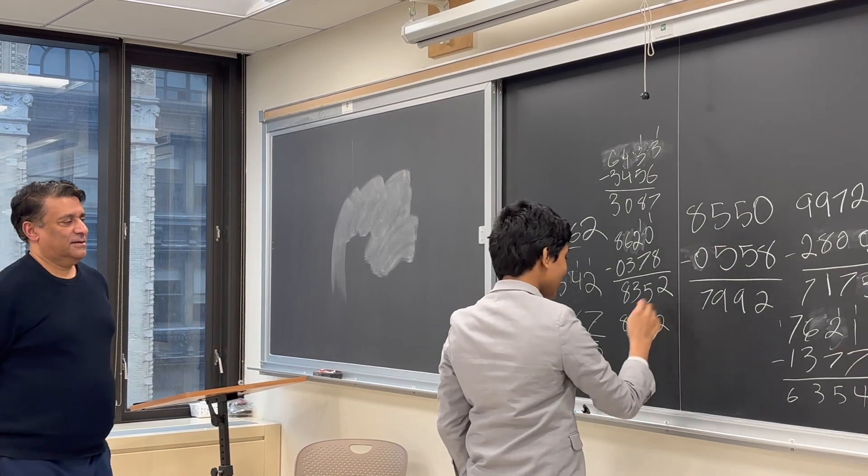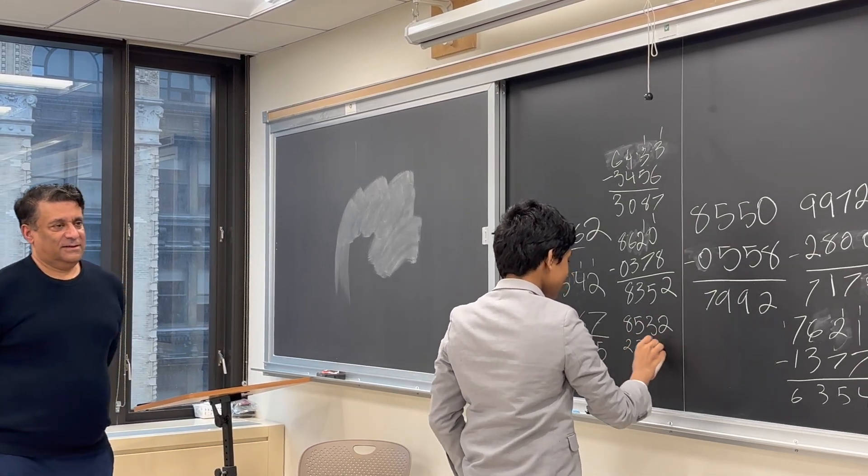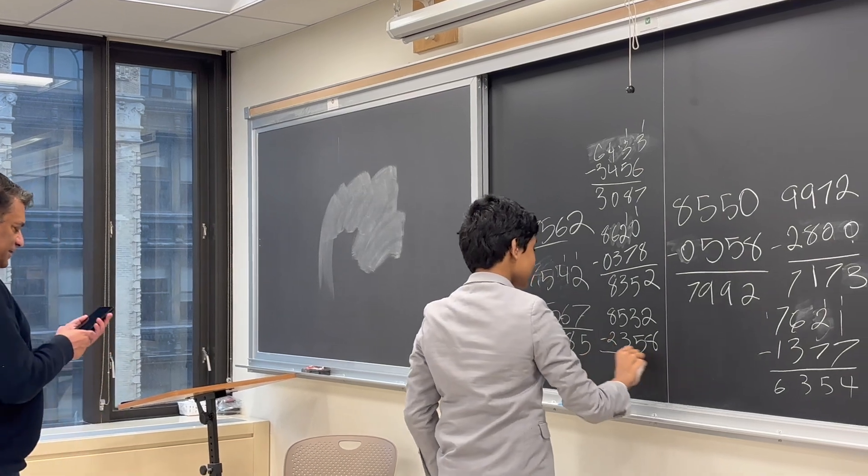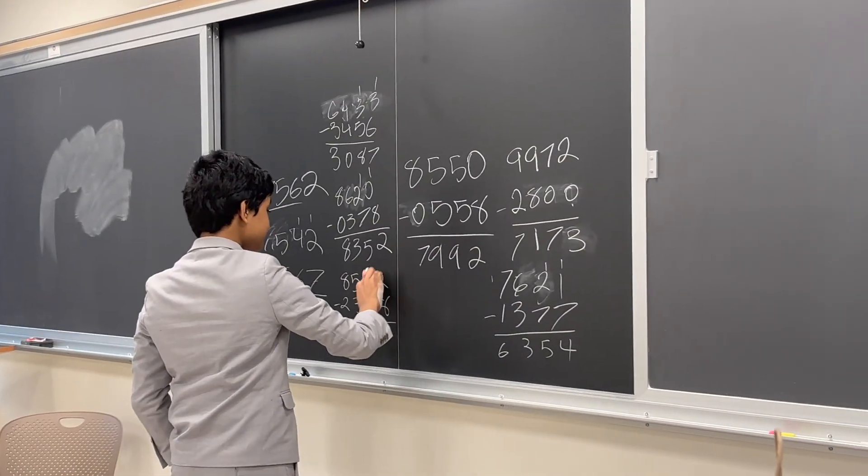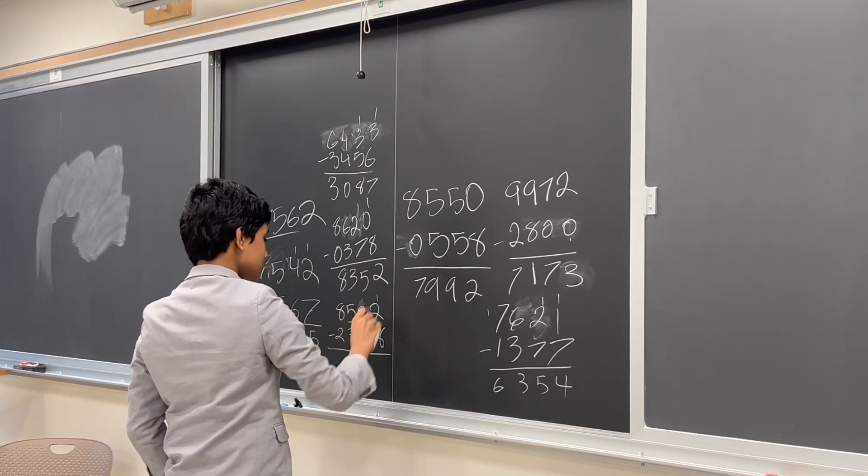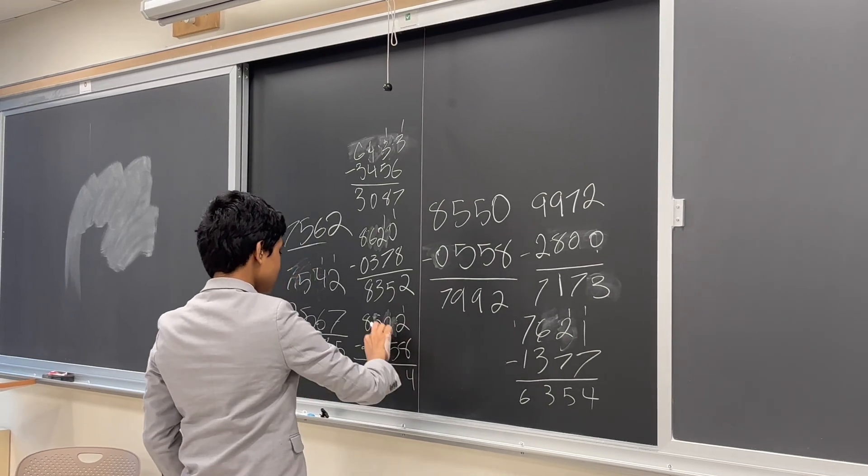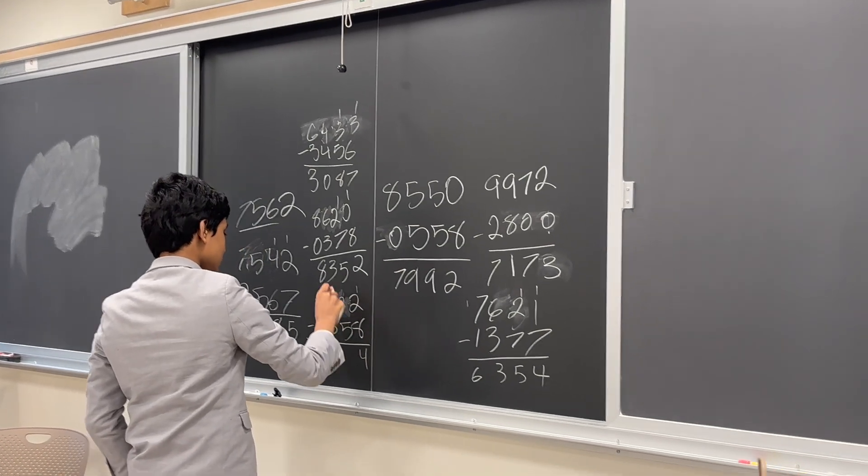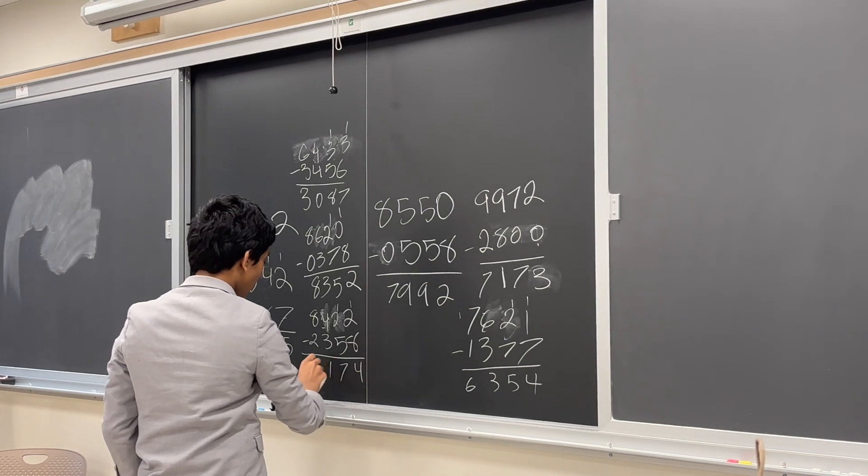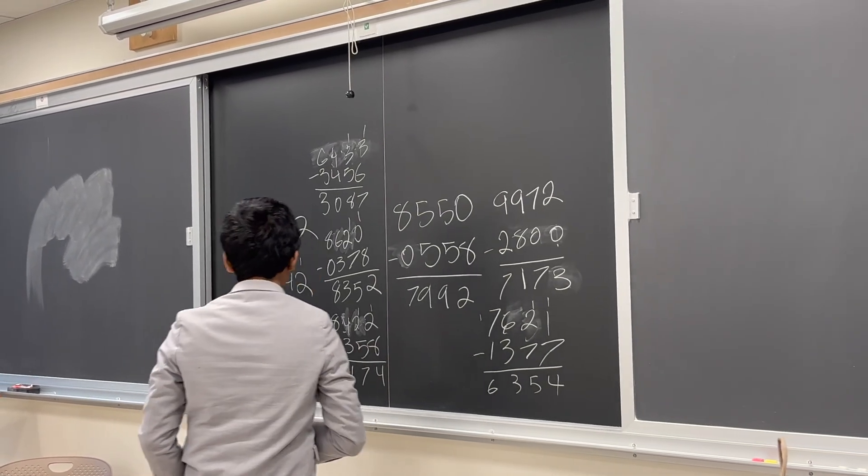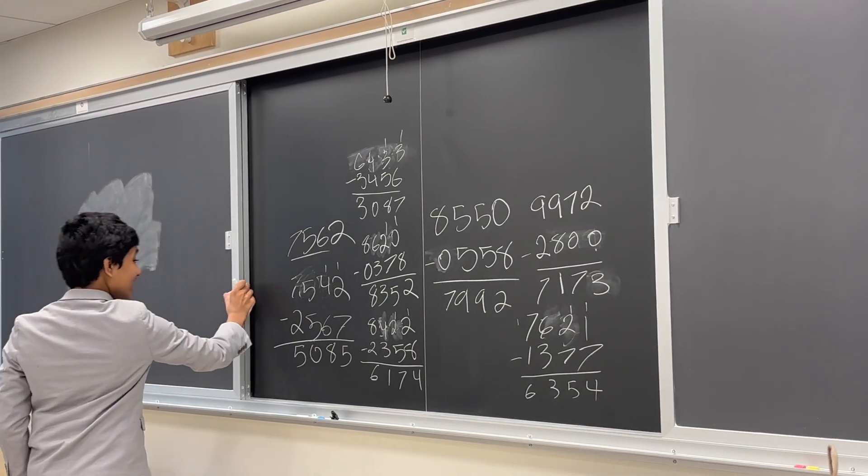Hey, that looks like the Fibonacci sequence, actually. Let's go to this. Pretty quickly. That's 1, and that's 6. How many iterations?